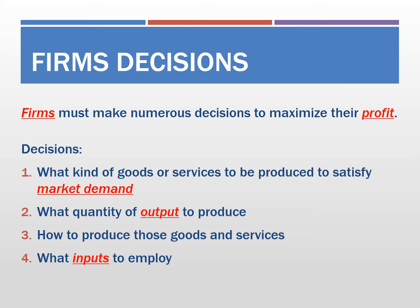In order to maximize profits, firms have to make the following decisions during production periods. Number one, they must find out what kind of goods or services they would like to produce. Number two, they identify the quantity of outputs they should produce to maximize profits. Number three, they determine how they should produce the goods and services. And number four, what kind of inputs they should employ in production to make the final goods and services to sell for profits. The firm's only goal is maximizing profits.